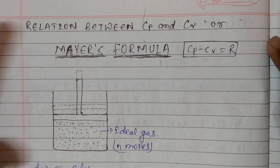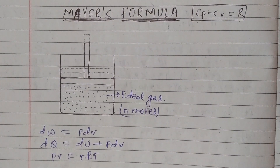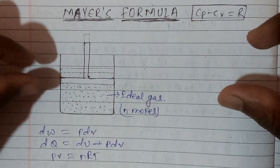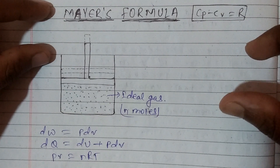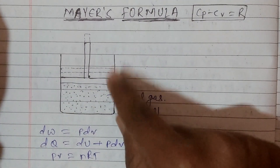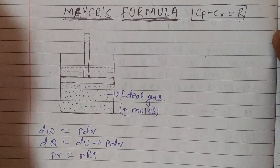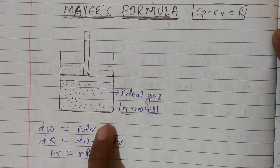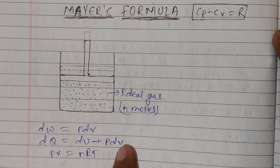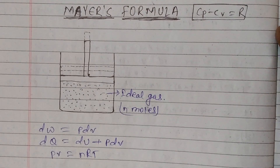Let's take a diagram. We have to look at the initial state and the final state. We have to look at the ideal gas. We have to look at V1 and V2 in the figure. DW is equal to P dV, and DQ is equal to DU plus P dV. This is the first law of thermodynamics. And PV is equal to NRT.